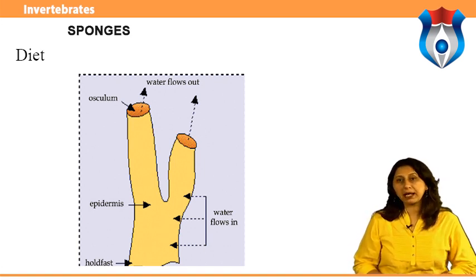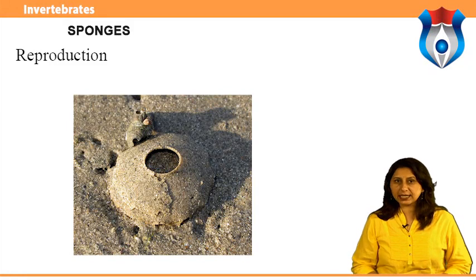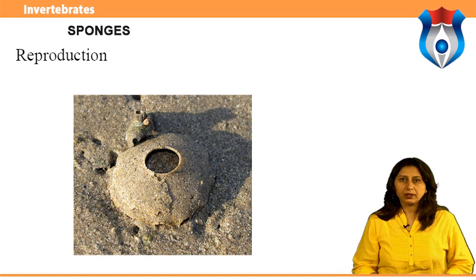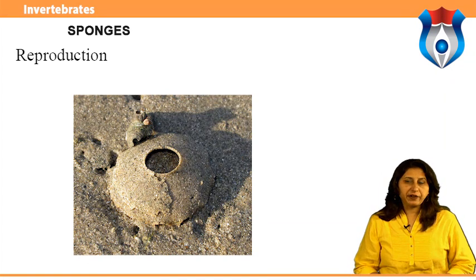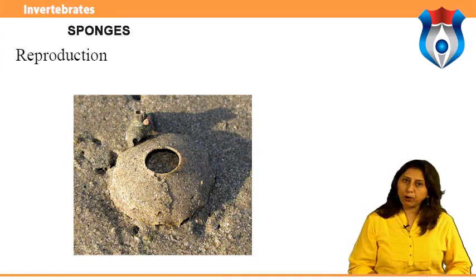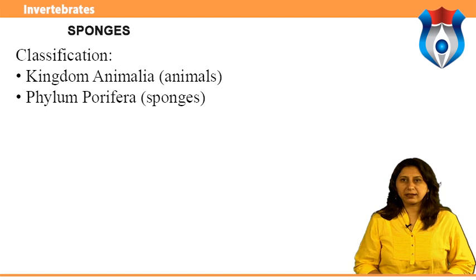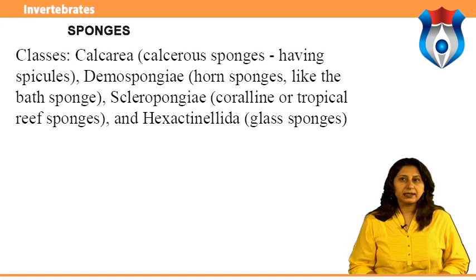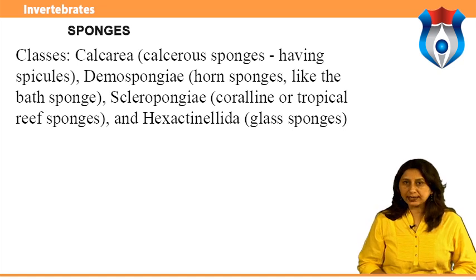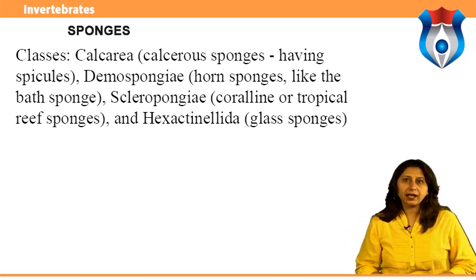Food is brought to other cells by amoebocytes. Reproduction: most sponges are hermaphrodites; fertilization is internal in most species. Some release sperm that float randomly to another sponge with the water current. Some sponges also reproduce asexually — fragments of their body or buds are broken off by water currents and carried elsewhere, where the sponge grows into a clone of the parent. Classification: kingdom Animalia, phylum Porifera, with classes Calcarea, Demospongiae, Sclerospongiae, and Hexactinellida.